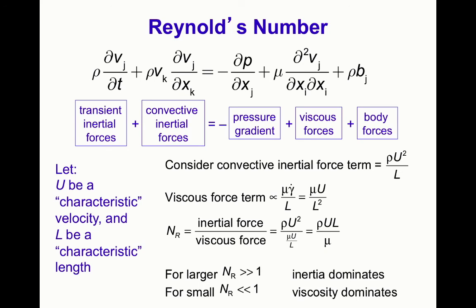This concludes our introduction to the Navier-Stokes equations. We derived solutions for two well-known problems — channel flow and tube flow (Poiseuille flow) — and saw that the Reynolds number measures the ratio of convective inertial forces to viscous forces. It is a dimensionless quantity useful for determining whether a flow may approach turbulence, and in most of the circulation the Reynolds number remains below the transitional value, so blood flow is predominantly laminar.